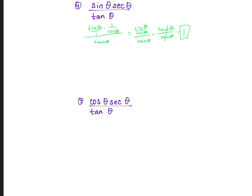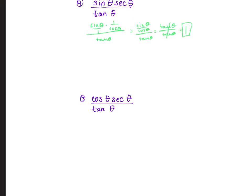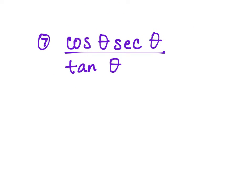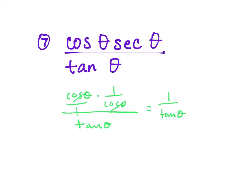Number 7: change everything to sine and cosine. We have cosine θ times secant θ, which is 1 over cosine θ. The cosine on top cancels with cosine on the bottom since we're multiplying, leaving 1 over tangent θ. And 1 over tangent θ is cotangent θ.